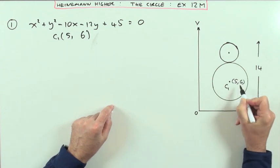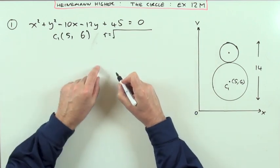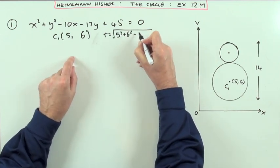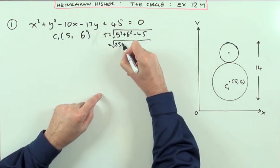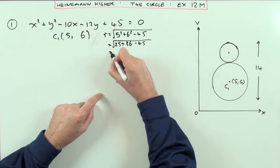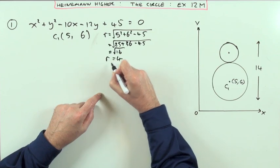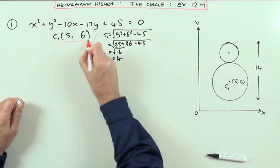So that centre is at 5 along 6 up. The radius would be the square root of, and that's just the centre squared, 5 squared plus 6 squared minus the number at the end. So that's the square root of 25, 36, take away 45, that's 16, root 16, it took a bit of room up here, 4.